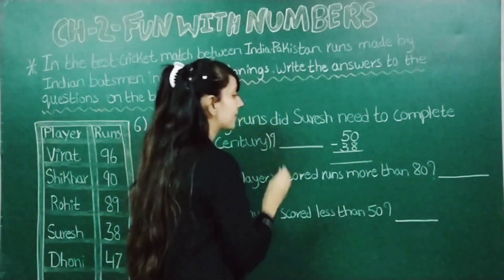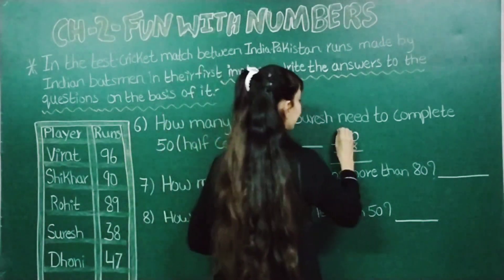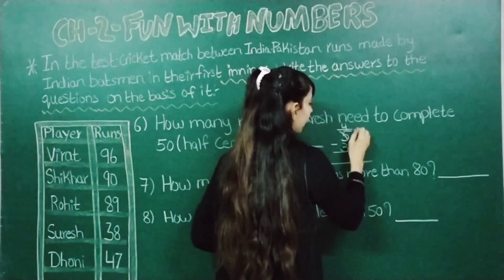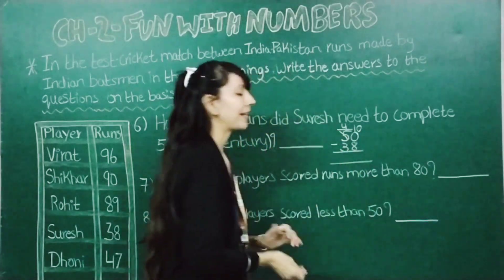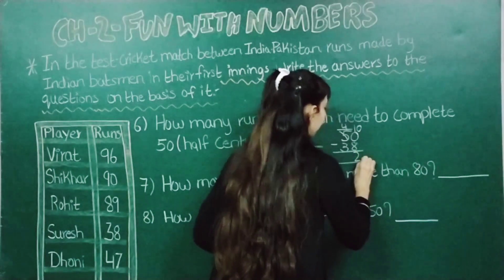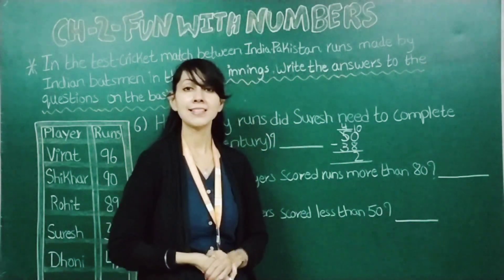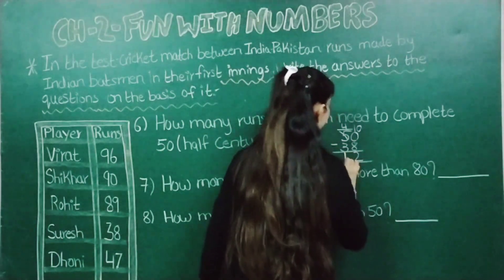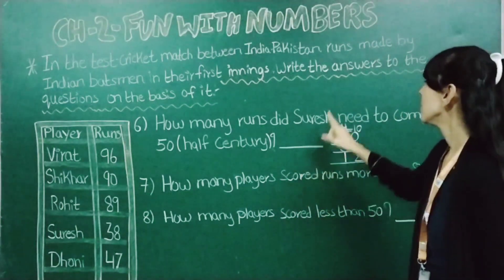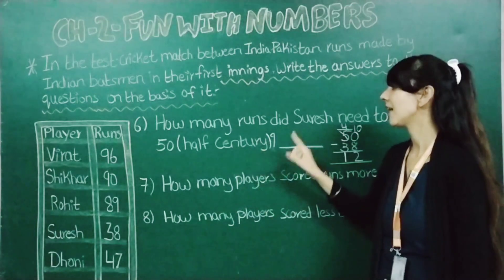Now from 0, 8 cannot go, so we will borrow from 5 — this becomes 4 and this becomes 10. Now 10 minus 8 gives 2, so here we will write 2. Now 4 minus 3 gives 1. So here you can say 12 runs Suresh needs to complete 50, meaning half a century.